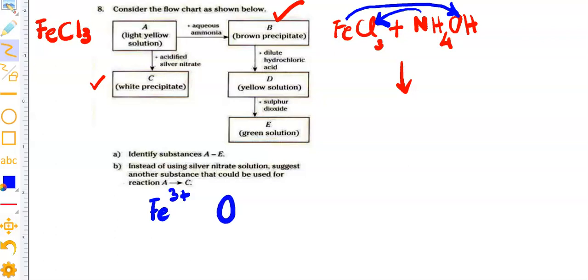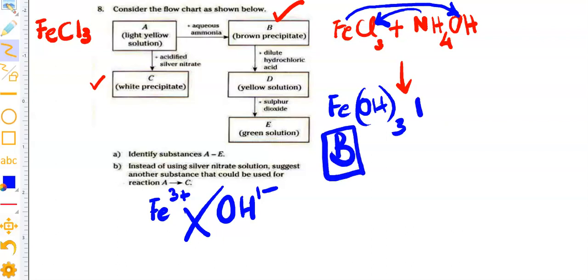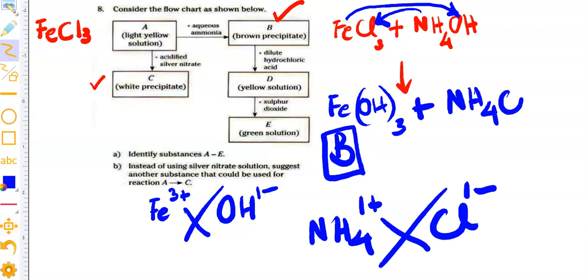Let me make formula for you. Fe contains 3+ and hydroxide contains 1-. So when you exchange them, you get Fe(OH)₃ which indicates that this is B, brown precipitate. The second part is ammonium ion. Ammonium ion carries 1+ charge and chloride ion carries 1- charge. So the formula is ammonium chloride aqueous. This is solid, this is aqueous, and this is aqueous. We need to balance this equation. Here we have 3, so we need to put 3 here and we have 3 chloride ions, so we need to put 3 here. So this is your balanced chemical equation and you identified that you have iron hydroxide in B.